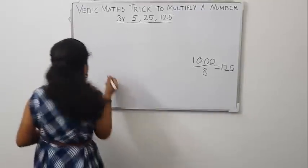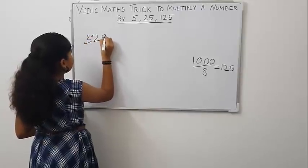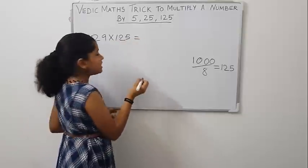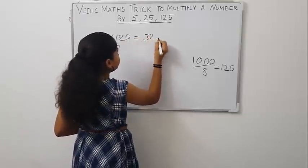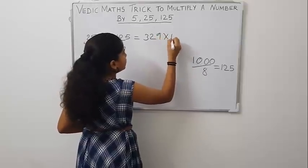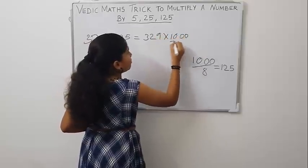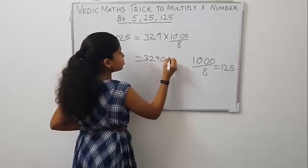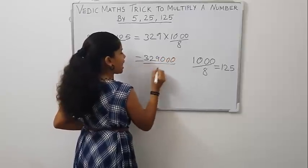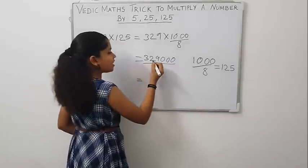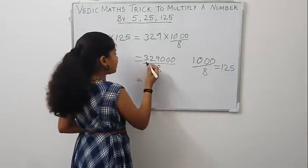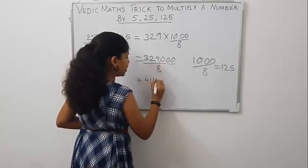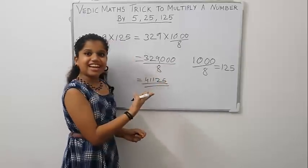Let us take 329 into 125. Now, write the question as 329 into 1000 by 8, 329000 by 8. Now, divide 329000 by 8. That is 41125. This is our answer.